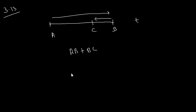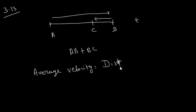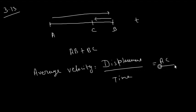Therefore, the magnitude of average velocity equals the magnitude of displacement divided by total time interval. In this case, the displacement is AC, so average velocity equals AC divided by t.